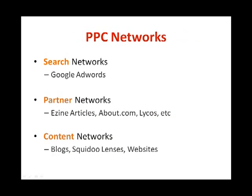PPC networks are places where you may choose to have your ad placed or shown. There are three main types of PPC networks: search network, partner network, and content network. Search networks include Google AdWords, Yahoo Search Marketing, and MSN. Partner networks are made up of Google partners which are normally large website directories — examples include EzineArticles, About.com, and similar sites. Content networks are websites or collections of websites that provide information in various forms such as articles, audios, and videos — examples include blogs, Squidoo lenses, or independent websites.